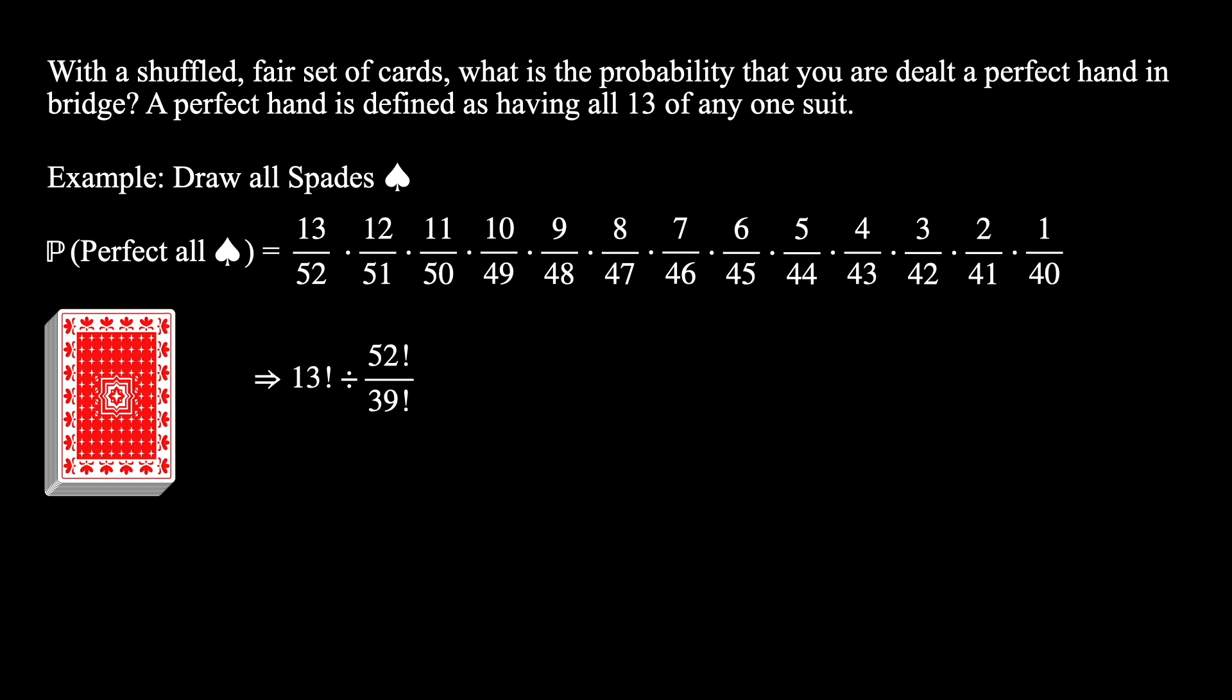Alright, now that we've worked through the simple example with all spades, let's move on to the probability of a perfect hand. We start with the probability that we've just computed. Now, we need to remember that there are 4 suits in a deck of cards. The probability that our first draw is from any of these suits is equally likely for all suits. Therefore, there are 4 ways in which we can make this perfect hand. And so, we multiply the probability by 4.